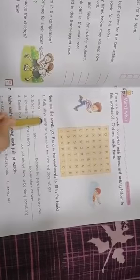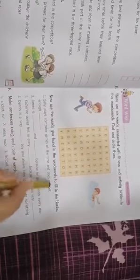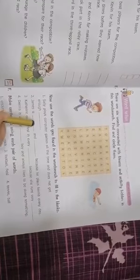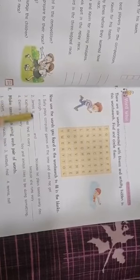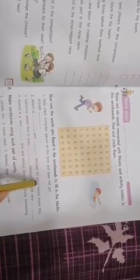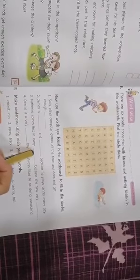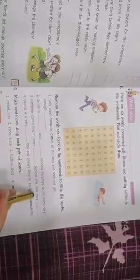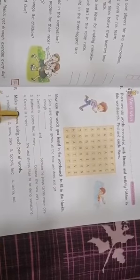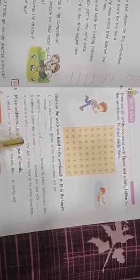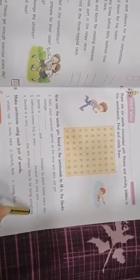Now use the words you found to fill in the blanks. Sally plays computer games all the time and does not get enough exercise. You have to write exercise here. Jane is healthy and fit because he plays tennis every day. Katherine comes first in every race because she runs very fast. Dennis is a very active boy and always likes to do something.